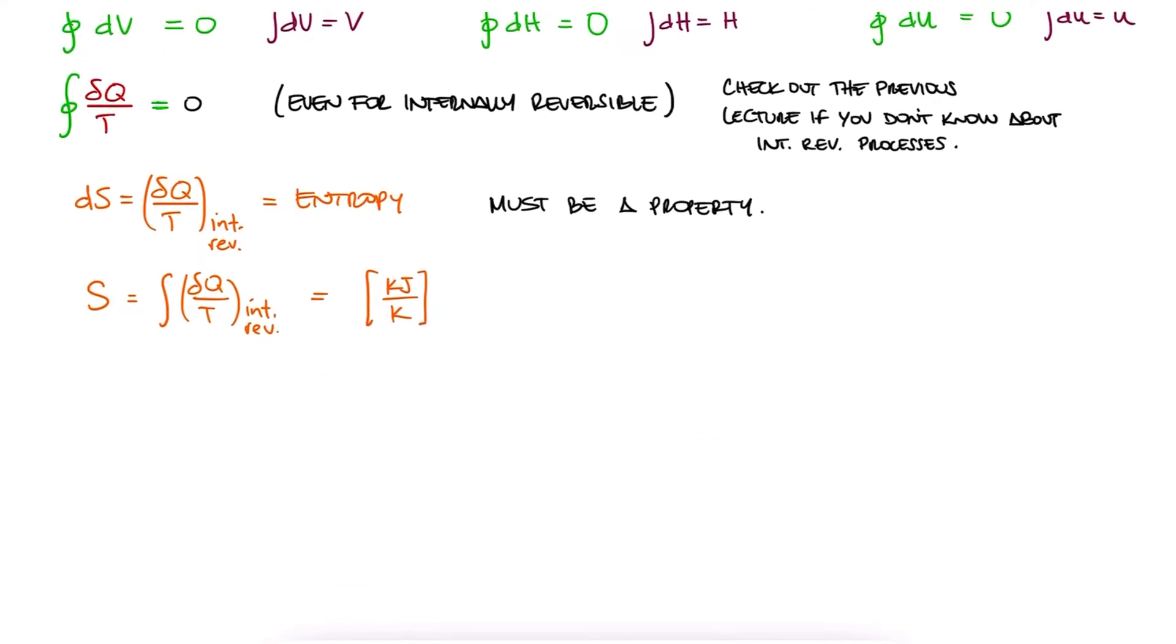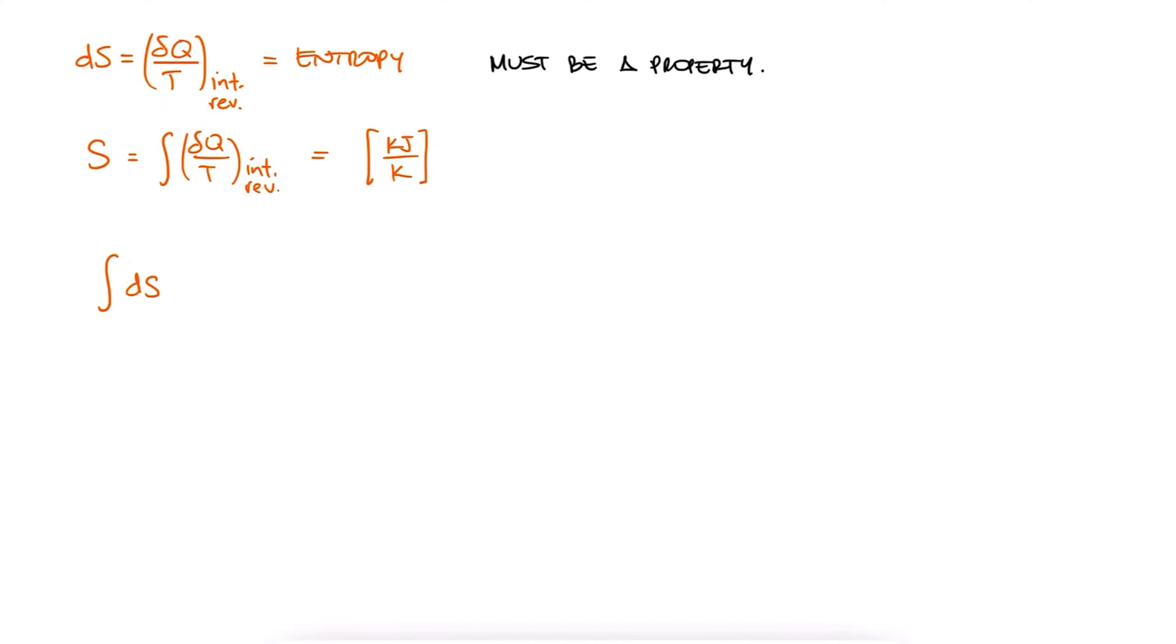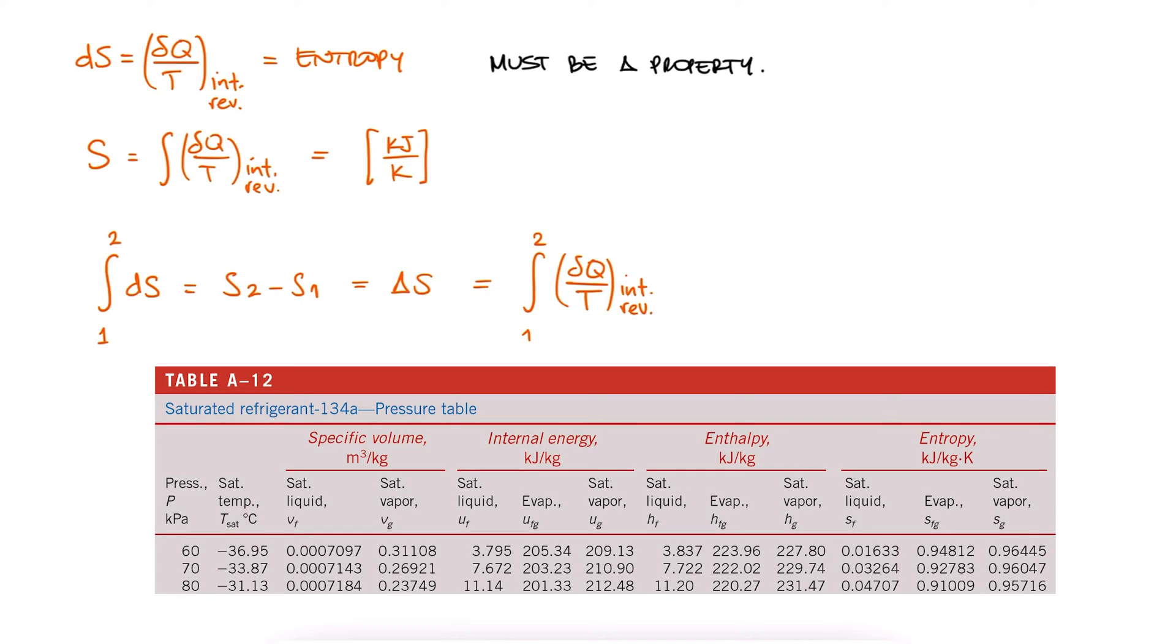So, just like we've done with all of the other properties so far, we can integrate ds between states 1 and 2 and get s2 minus s1, or just delta s, or even the integral of delta q over t. There is applications for calculating the integral mathematically, but for thermo 1, we'll focus on the tabulated data. You've seen this before in property tables.